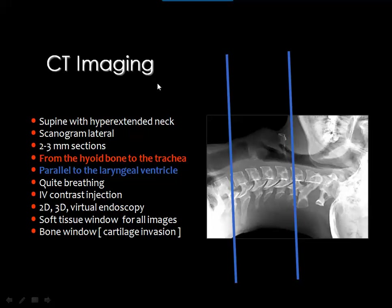In CT scan of the neck, we include the area to be scanned and align the scanning plane as best we can to the laryngeal ventricle. We proceed from top to bottom at every two-millimeter scan intervals, inject contrast media as needed, and 2D reconstructed images in the sagittal and coronal planes are valuable. Bone window may be used if there is suspicion of bone or cartilage pathology in the cervical spine or laryngeal cartilages.